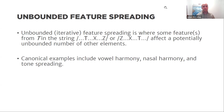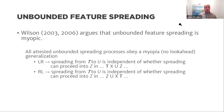Today's topic is unbounded feature spreading. Unbounded feature spreading is where some feature — usually of a segment in a string — may affect a potentially unbounded number of segments elsewhere in the string. Canonical examples include vowel harmony, nasal harmony, and tone spreading. Wilson (2003, 2006) argues that unbounded feature spreading is myopic: the application of harmony is contingent only on local information, with no access to downstream information in the string.